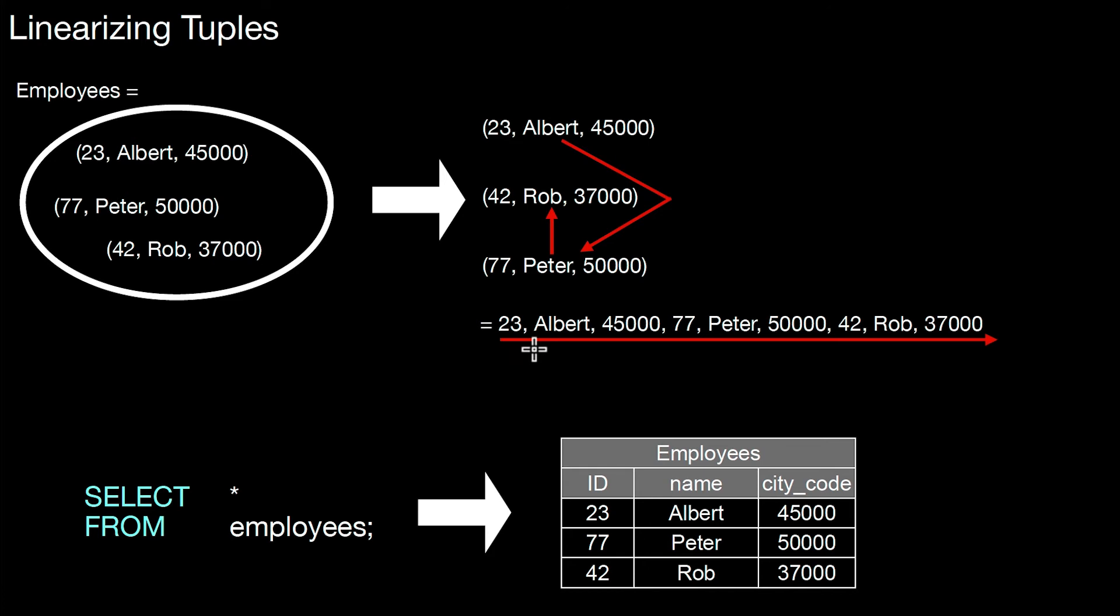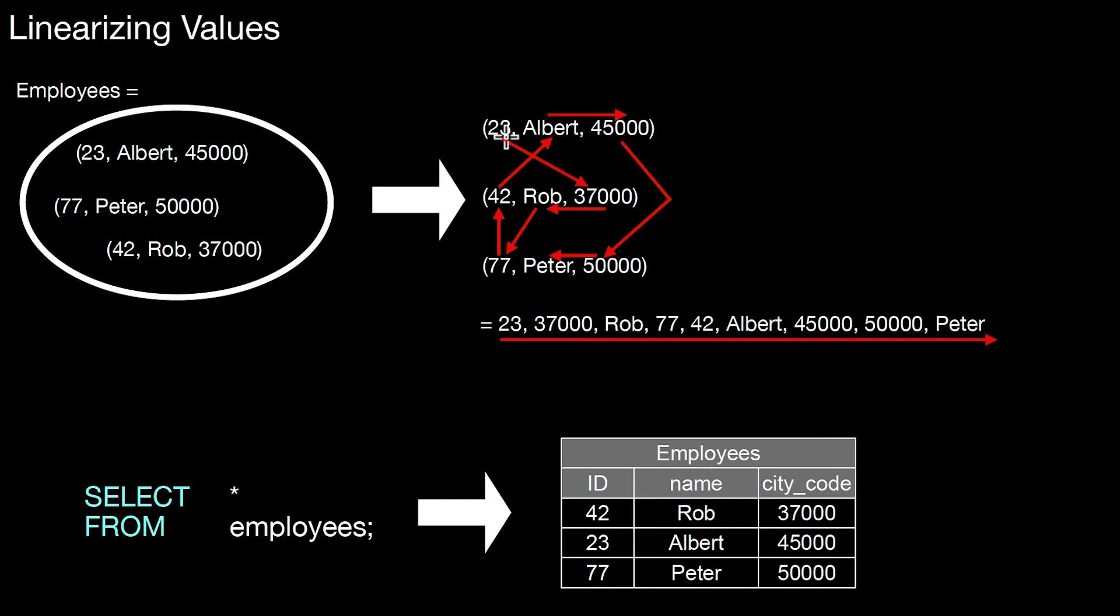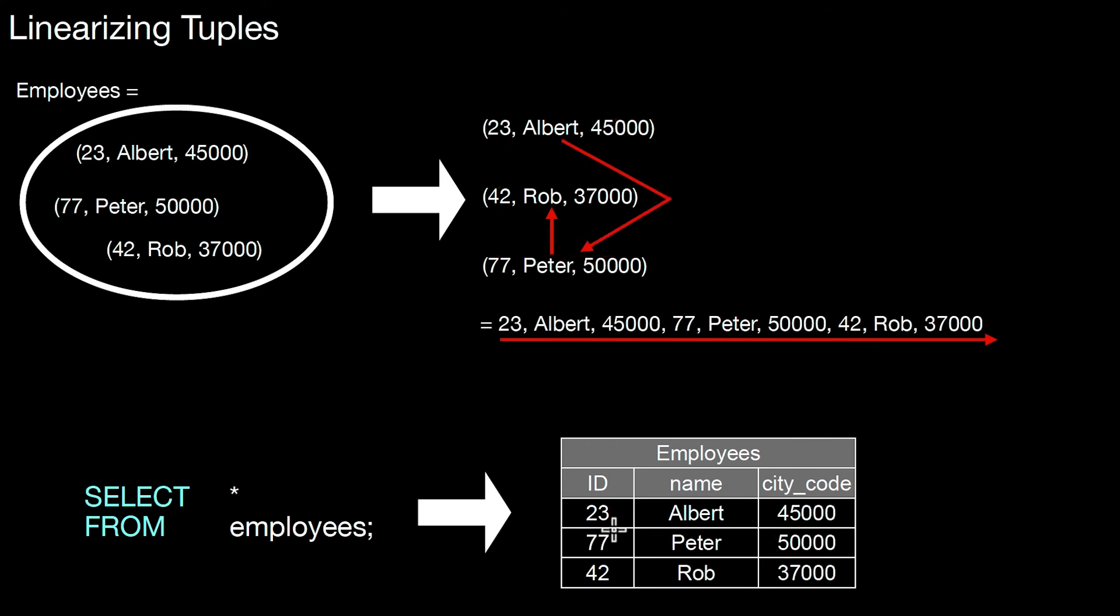As we have to make a decision on ordering, on linearizing the tuples, why not make it more extreme? Why not make a decision to linearize individual data values rather than tuples? So this could look like that. What this means is the linearization order goes crisscross over different tuples. It's not that we linearize all the data values of a specific tuple at once, but rather we first store 23, then 37,000, then Rob, 77, 42, Albert, 45,000, 50,000, Peter, and then we are done. So this leads to this order for storing individual data values. And that again might mean that if you do a SELECT star from employees, we end up with this specific order, which is again different from the previous one.